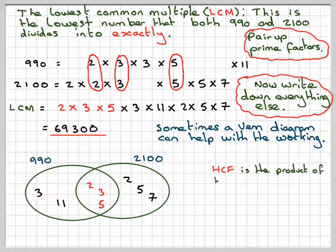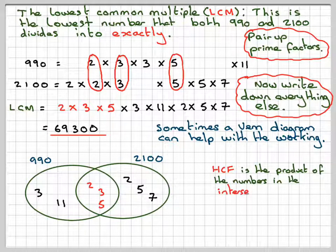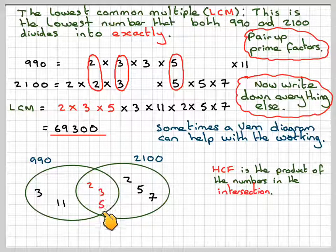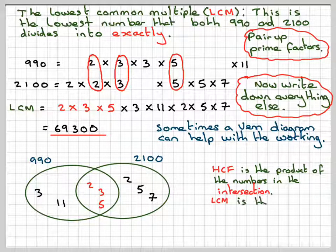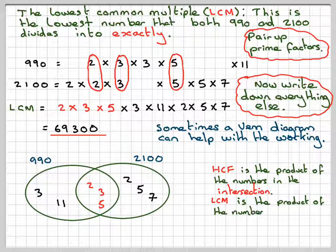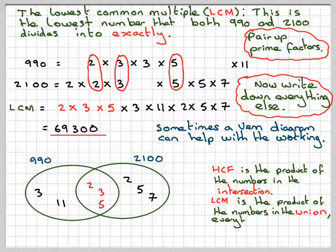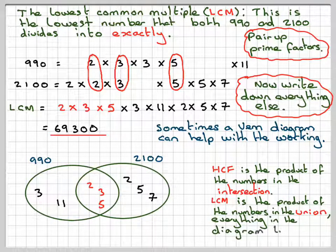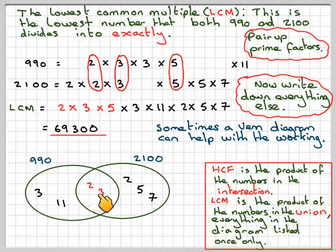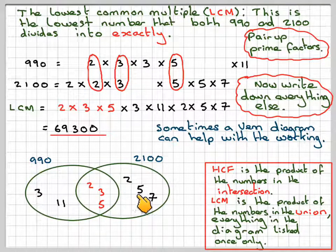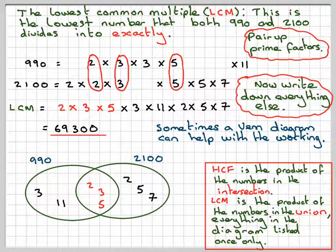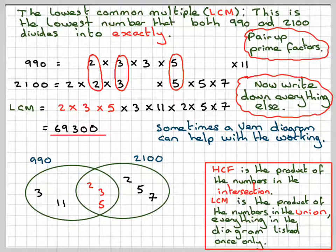For the HCF, it's the product of the numbers in the intersection. So the product of 2, 3, and 5. And for the LCM, it's the product of the numbers in the union, i.e. everything in the diagrams: 3 times 11, 2 times 3, times 5, times 2, times 5, times 7. We call that the union of two sets.